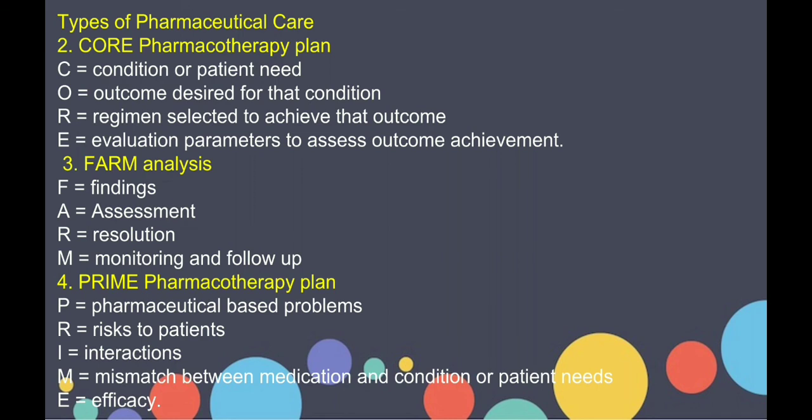The next type is the PRIME pharmacotherapy plan, which includes pharmaceutical intervention. The goal is to identify the actual or potential problem that could compromise the desired patient outcome. P stands for pharmaceutical-based problem; R stands for risk to the patient; I is for interaction; M is for mismatch between the medication and the condition or the patient need; and E is for efficacy.